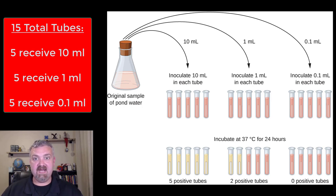You start with your 15 lactose broth tubes. The first five you're adding 10 milliliters of your original sample. The second five you're adding 1 milliliter, and the third you're adding 0.1 milliliters.